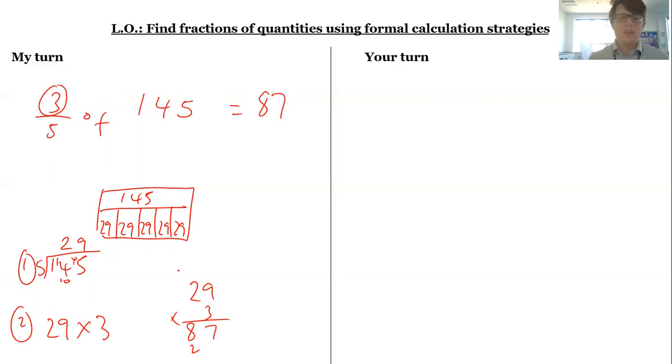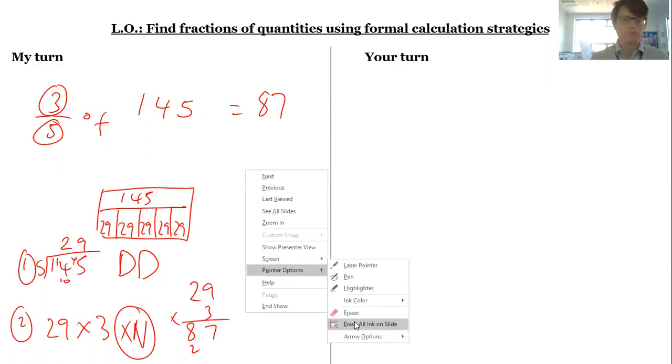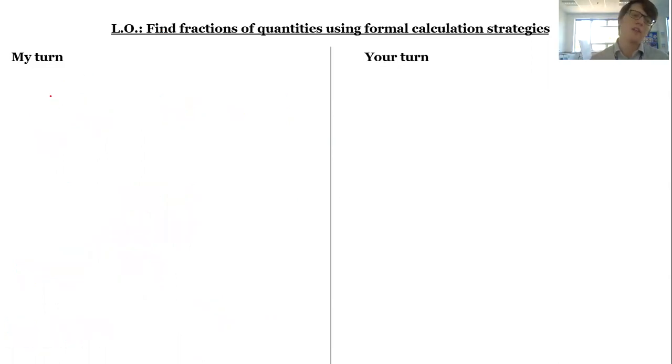So the first step: I've divided by the denominator to split it up into the number of parts, then multiply by the numerator. Not just one-fifth—I needed three-fifths. For one more example quickly, and then you're going to have a go. Say I want to find five-sixths of...